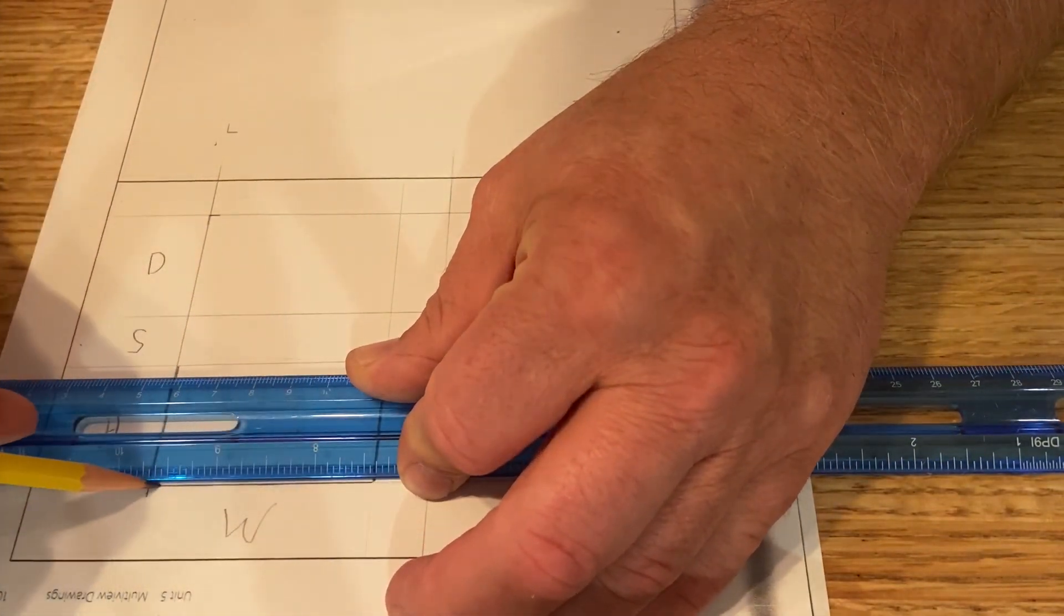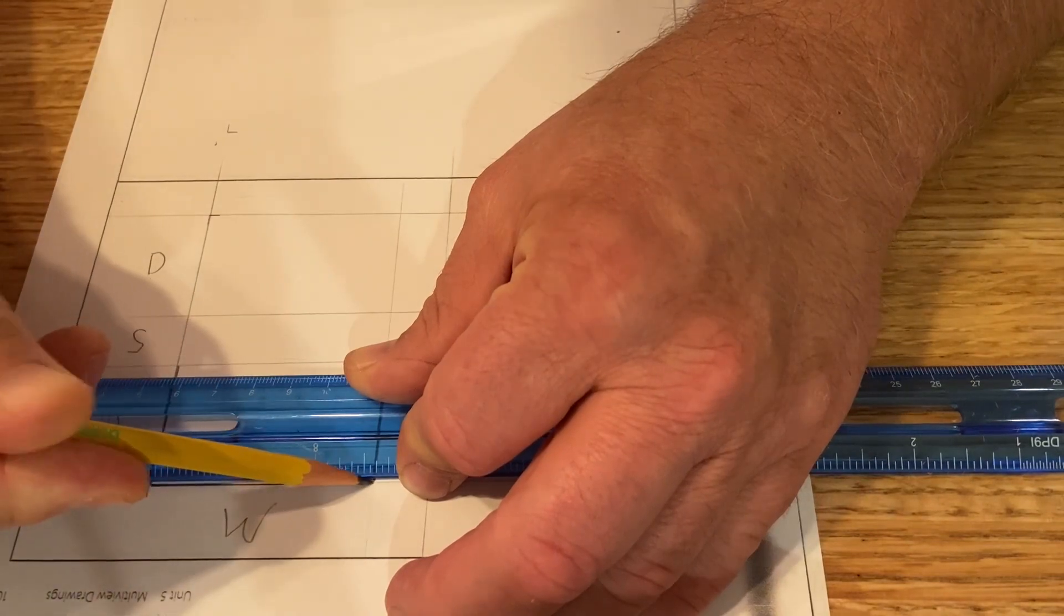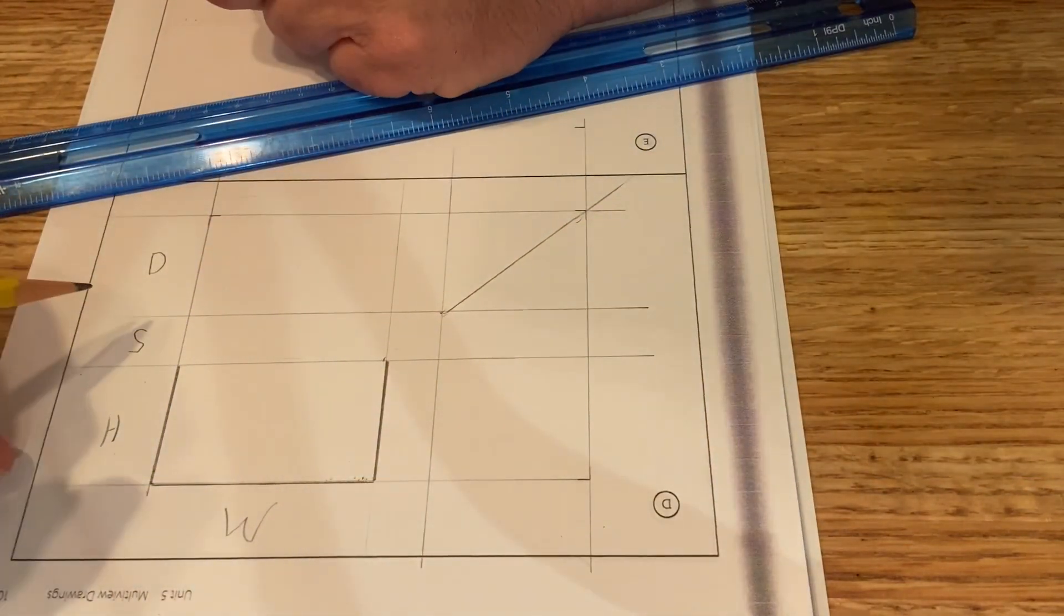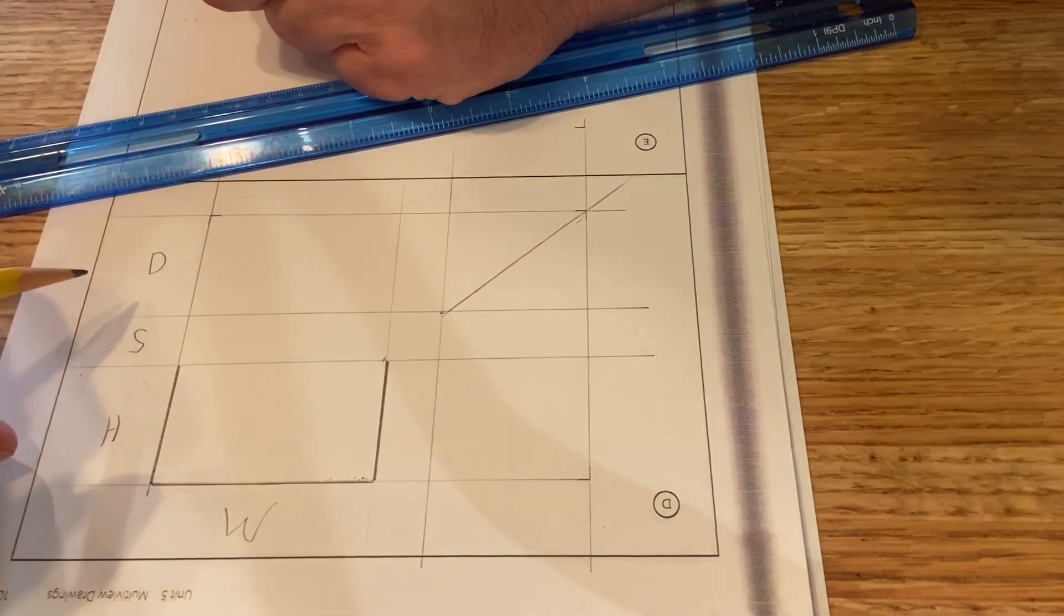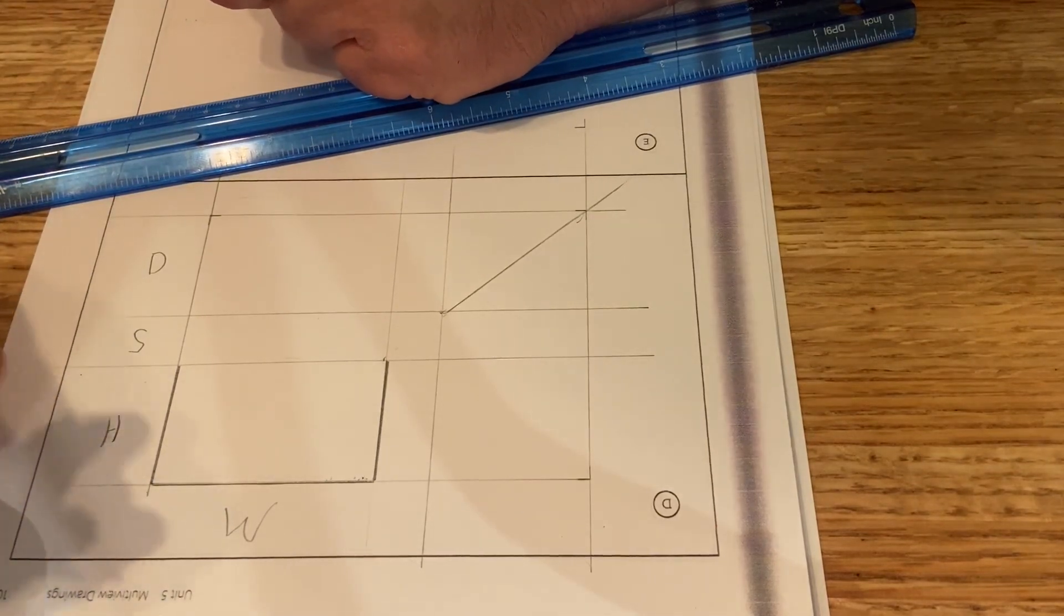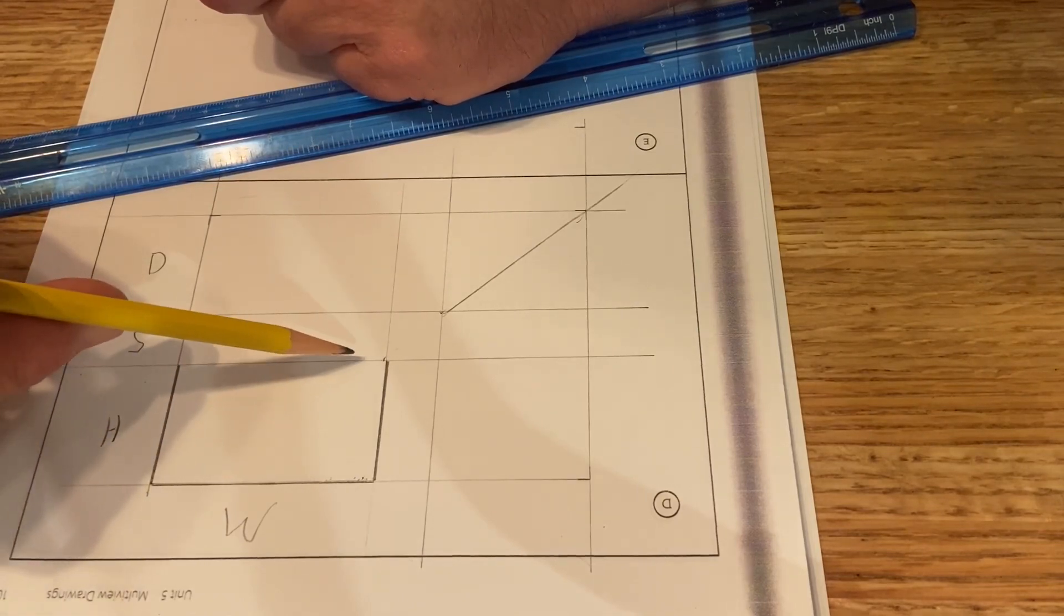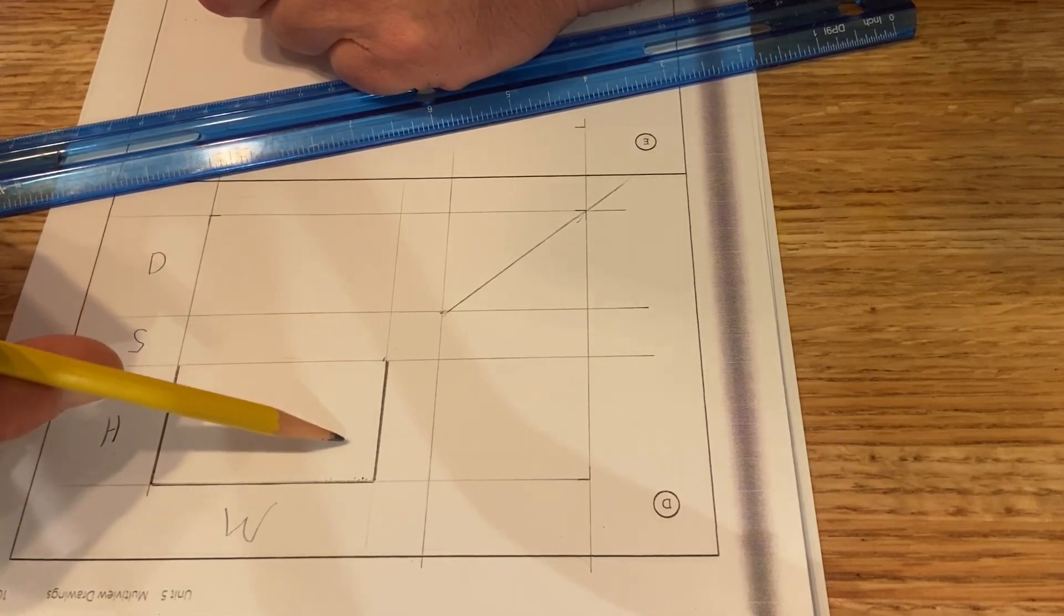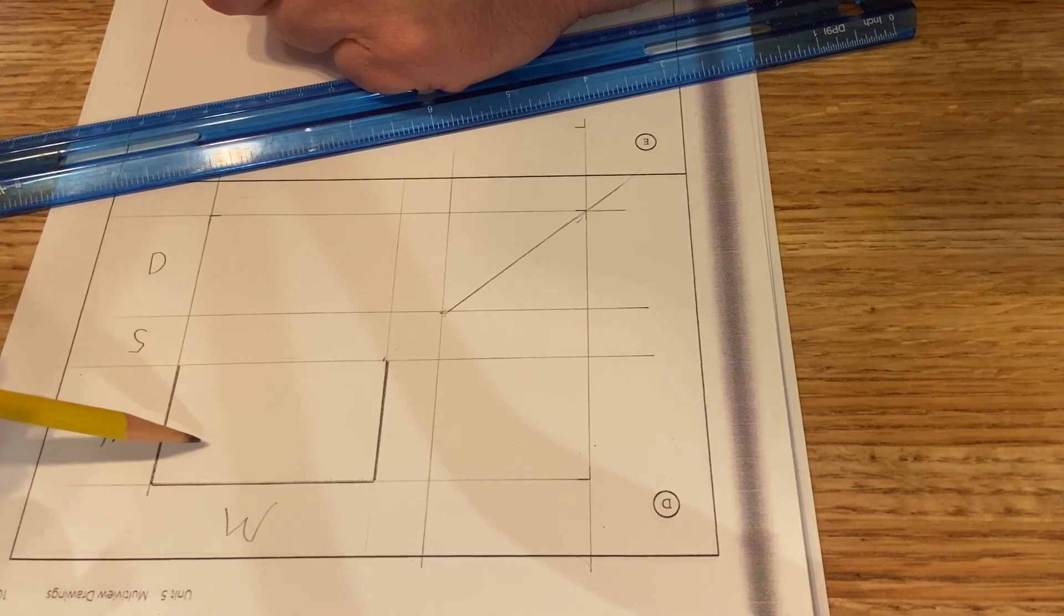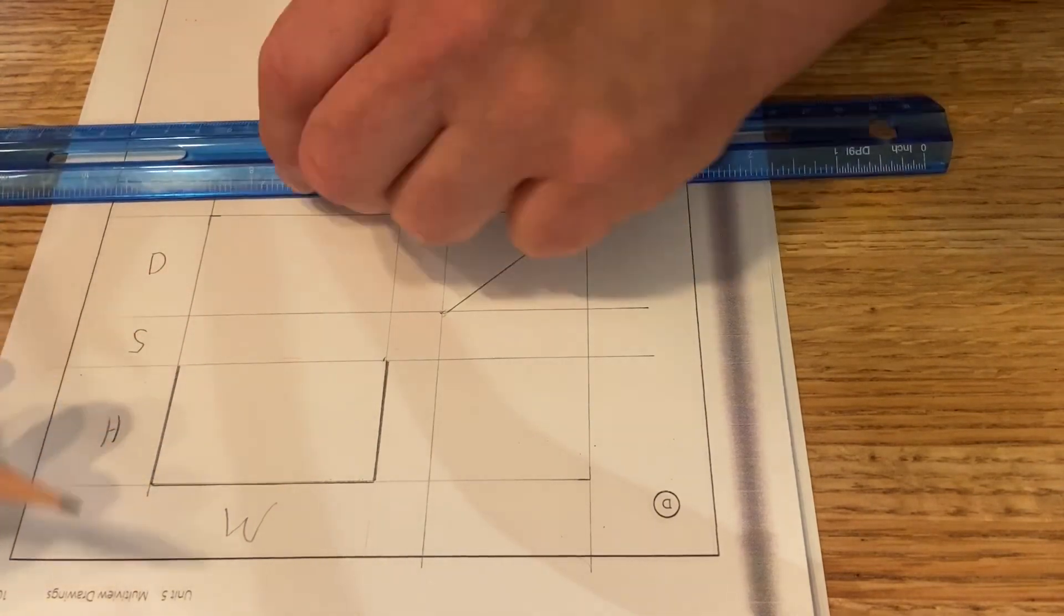And I know that the bottom is also going to be solid in this view. So I'm going back down now, where before I was just doing construction lines. Now I'm going back in and making these solid object lines. And again, this is a U-shaped block.